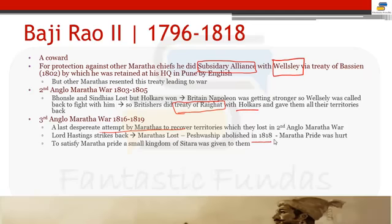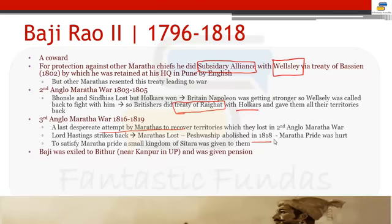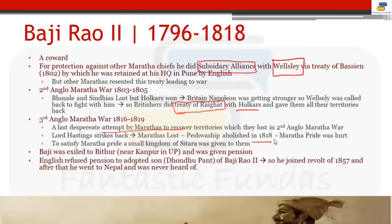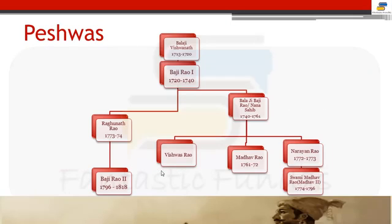Lord Hastings struck back and the Marathas lost. Peshwaship was abolished in 1818. Maratha pride was hurt, and to satisfy it, a small kingdom of Satara was given. Bajirao II was exiled to Bithur and given a pension. The English refused pension to his adopted son, Dhondu Pant, who then joined the Revolt of 1857 and later went to Nepal, never to be heard of again. This was how Peshwaship was completely finished from the map of India.